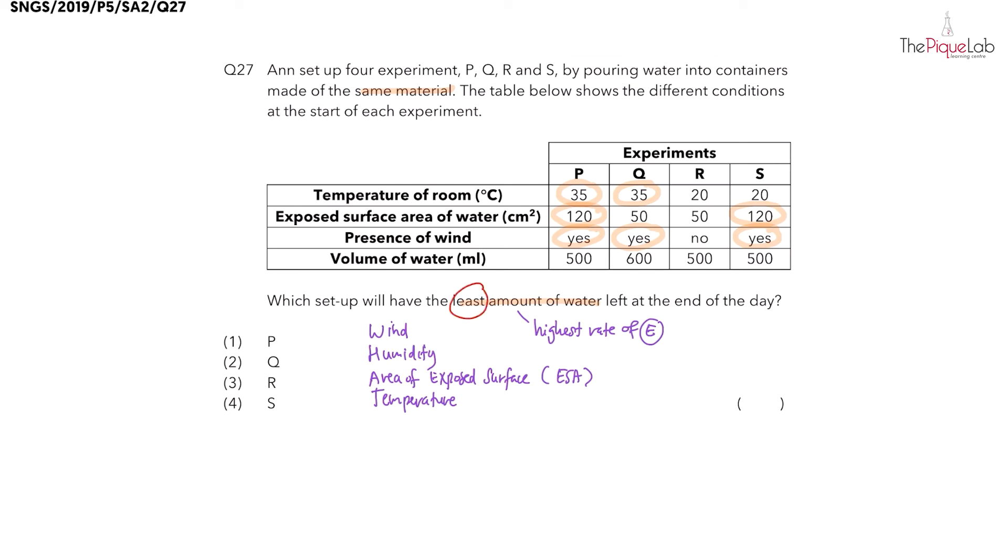So each setup will have the fastest rate of evaporation, leaving behind the least amount of water left at the end of the day. We have setup P, and that gives us the answer as option 1.